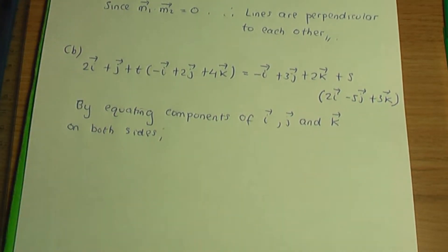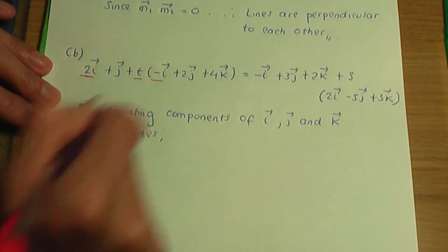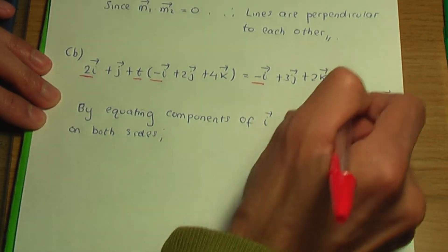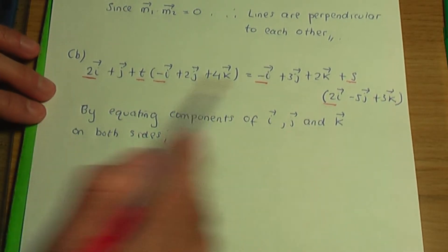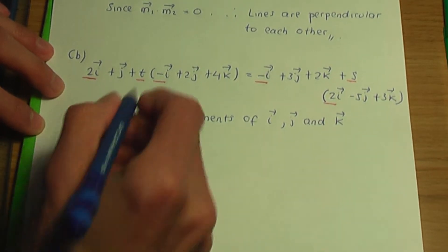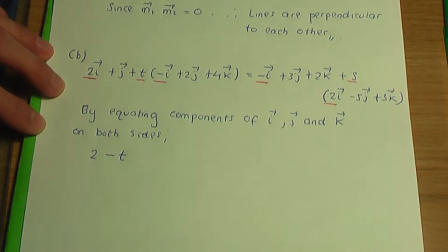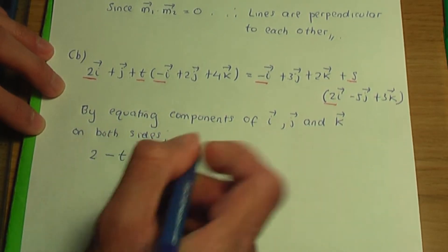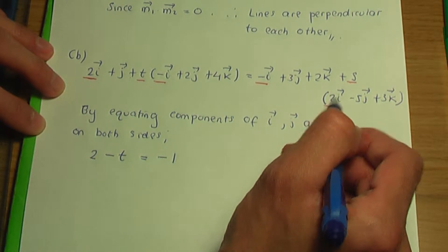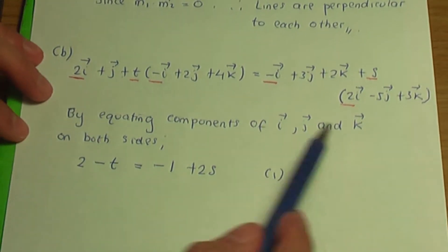Concentrating on the i components: on the left hand side I have 2 + t(-1), which is 2 - t. On the right hand side I have -1 + s(2), which is -1 + 2s. So equating i components: 2 - t = -1 + 2s. Let's call that equation number 1.